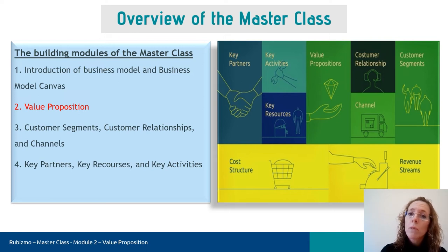The first module comprehends business models and introduces the business model canvas. The second module explores the business model canvas value proposition, while the third handles the right-hand side, in other words the consumer side of the business. The last and fourth module explores the bits and pieces of the left-hand side of the business model canvas.